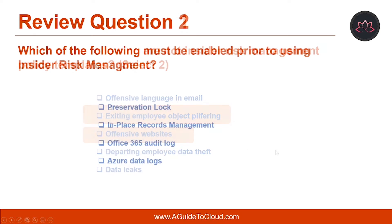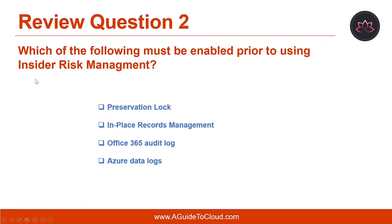Question number two: which of the following must be enabled prior to using insider risk management? The correct answer is the Office 365 audit log.